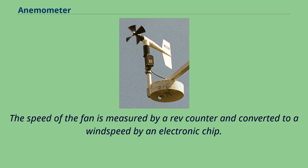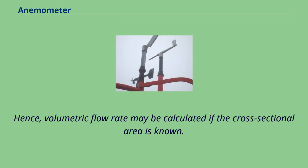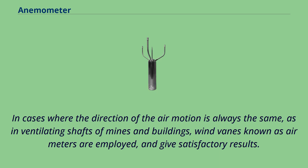The speed of the fan is measured by a rev counter and converted to a wind speed by an electronic chip. Hence, volumetric flow rate may be calculated if the cross-sectional area is known. In cases where the direction of the air motion is always the same, as in ventilating shafts of mines and buildings, wind vanes known as air meters are employed and give satisfactory results.